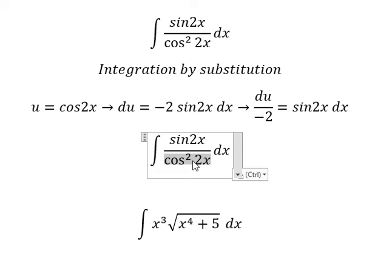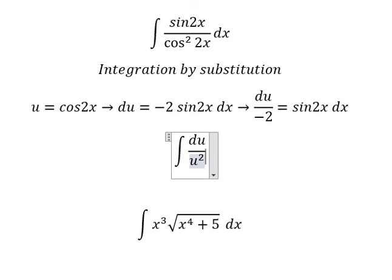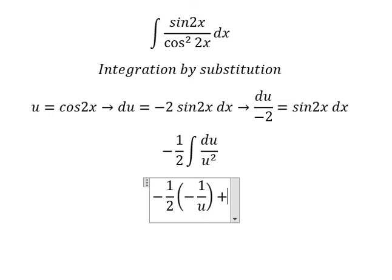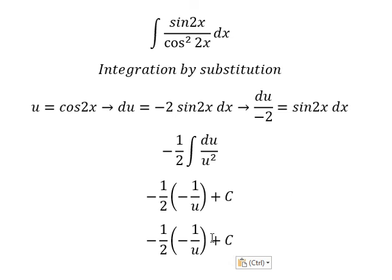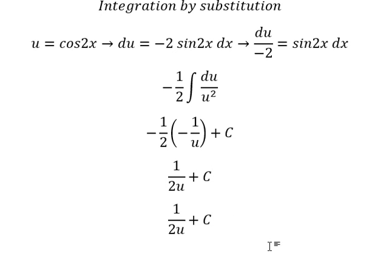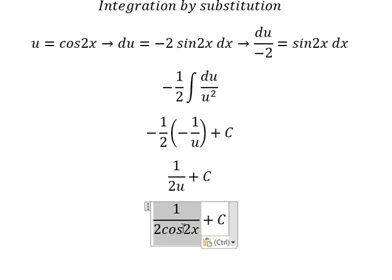We change the cosine 2x by u, and sine 2x dx we change by du over negative 2. The integration of u over u squared gives about negative 1 over u, and we add c. The negatives cancel to give positive, and with the 1 over 2, u is cosine 2x. This is the final answer.